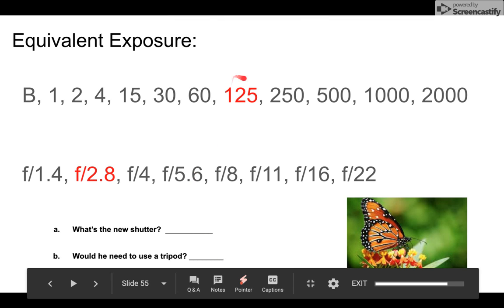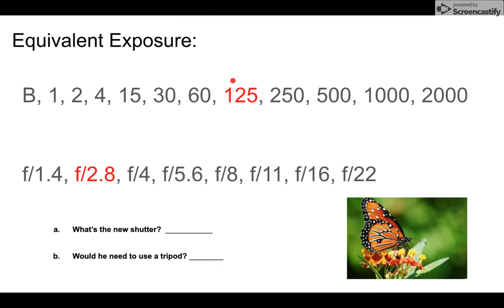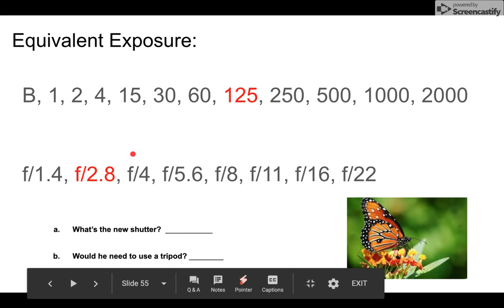We know in this question that the photographer started with the settings at 1 over 125 and f/2.8, and he wanted to include more of the flowers in focus in the background, so therefore he moved his aperture to f/11.